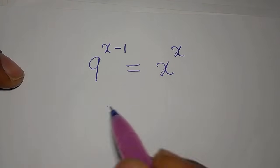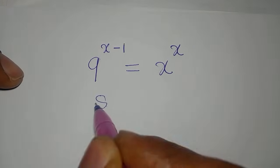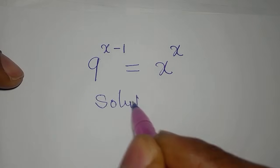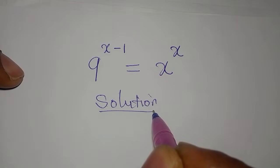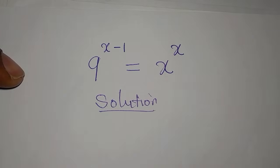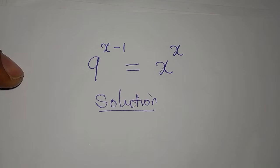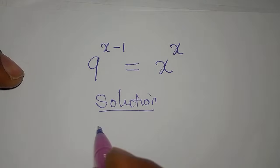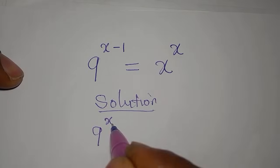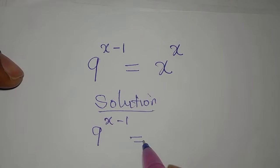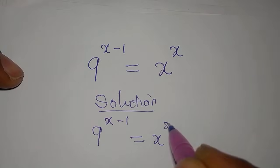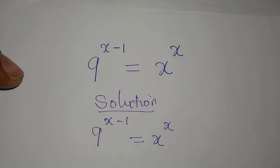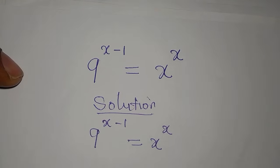Hello everyone, welcome to Foucault Mathematics. Before us is an Olympiad mathematics problem. Let's solve this in detail. The equation is: 9 to the power of x minus 1 is equal to x to the power of x.